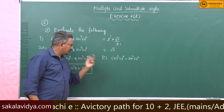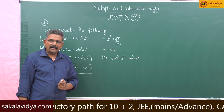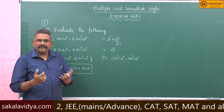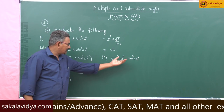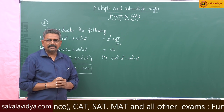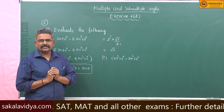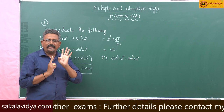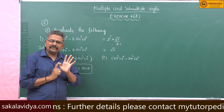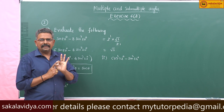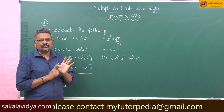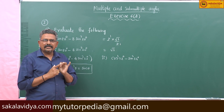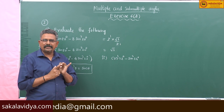cos 72 degrees can be written as cos(90° - 18°), which equals sin 18°. Whereas sin 54 degrees is sin(90° - 36°), which equals cos 36°. We know sin 18° = (√5 - 1)/4 and cos 36° = (√5 + 1)/4.